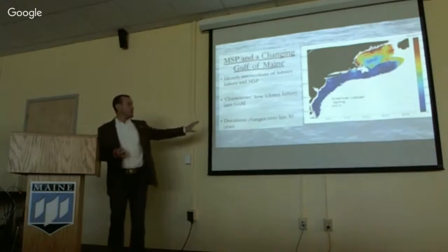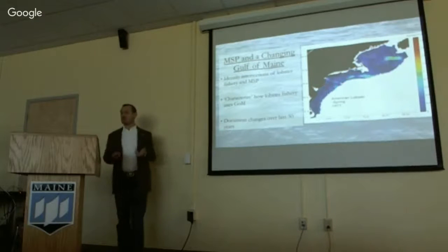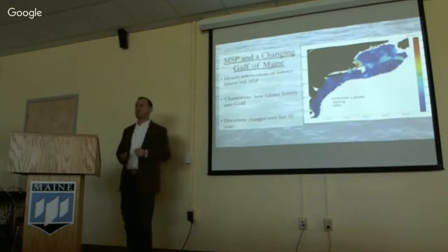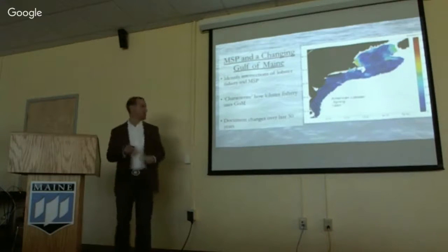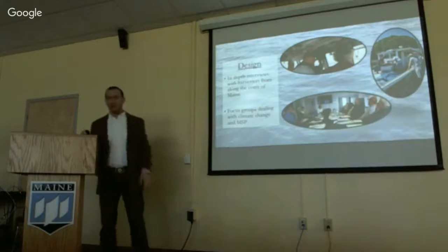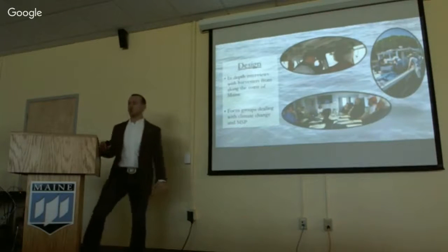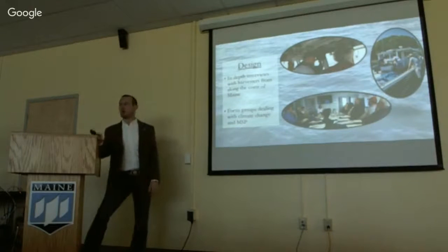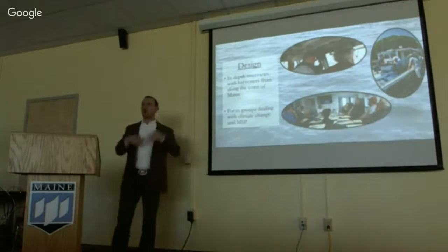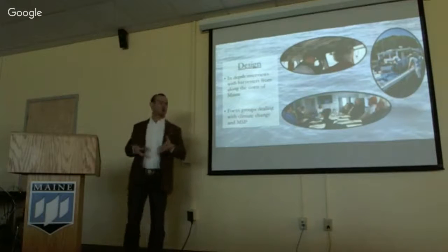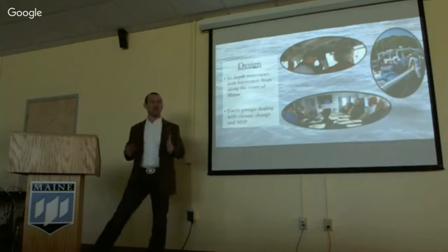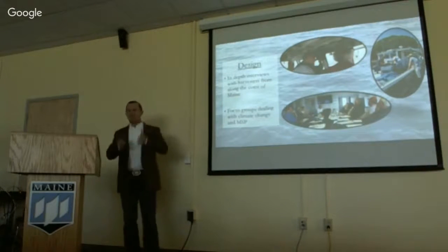One of the primary things we wanted to do is highlight and document the changes the fishery has experienced over the last 30 years, because there's one thing the ocean planning world is not good at — dealing with change. We need to find a way to incorporate change into the ocean planning process. Over the fall and winter, we did roughly 24 in-depth interviews with fishermen from across the coast of Maine, at least two or three from each of Maine's seven lobstering zones, to incorporate the spatial diversity of the fishery. We also did two focus groups.